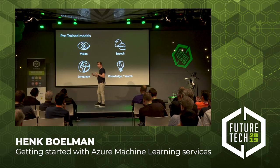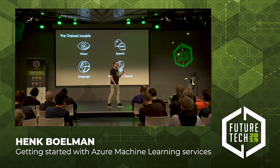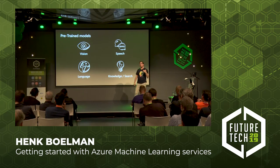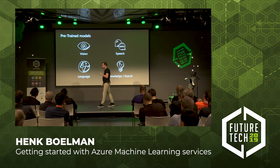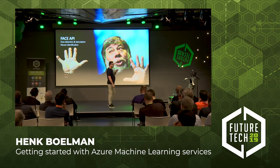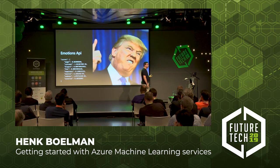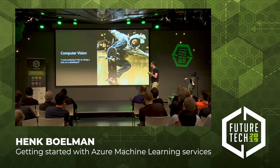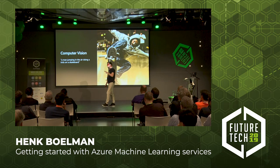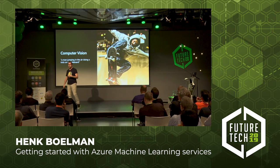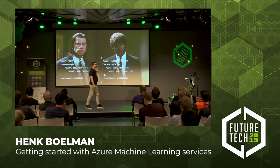If we look at the pre-trained models, they divide into four categories: vision, speech, language, and knowledge. Vision makes your computer see, speech lets it talk and listen, language helps it understand what is spoken, and knowledge lets you hook up your application to the Bing search engine. In the vision category, there is a Face API, an Emotions API, and a Computer Vision API that tells you a lot about an image. All these services work out of the box — you don't have to do much to make them work.